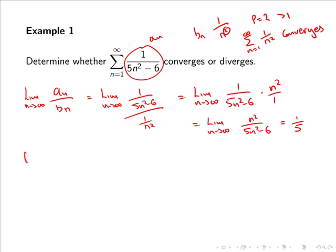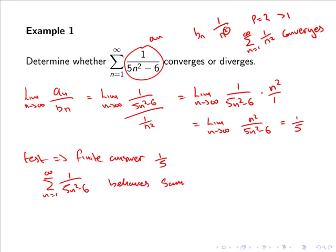The limit comparison test has given a finite answer of 1 over 5. That means the series from n equals 1 to infinity of 1 over 5n squared minus 6 behaves the same as the series from 1 to infinity of 1 over n squared. Since we know that the series from 1 to infinity of 1 over n squared converges, our series from 1 to infinity of 1 over 5n squared minus 6 is convergent.